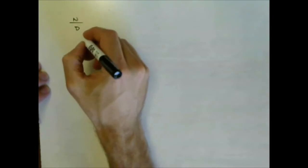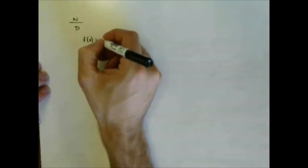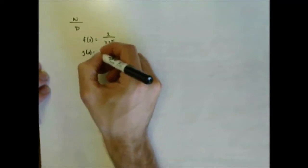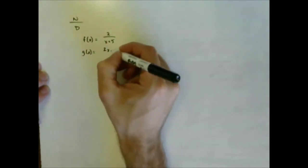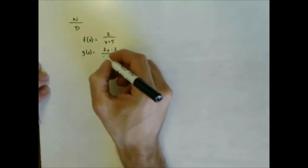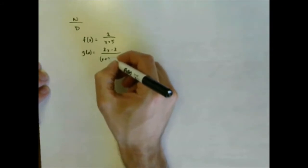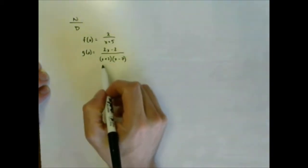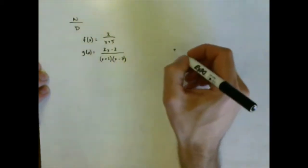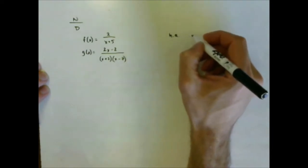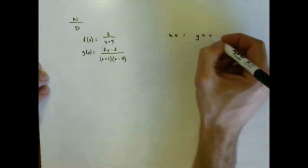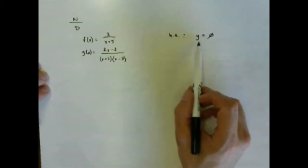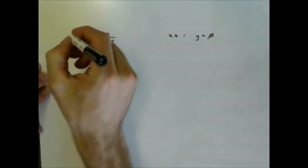When the degree of the denominator is higher than the degree of the numerator — for example f(x) = 2/(x+5) or g(x) = (2x−2)/(quadratic) — this is Case 1, and it gives us a horizontal asymptote of y = 0. The x-axis is the horizontal asymptote.